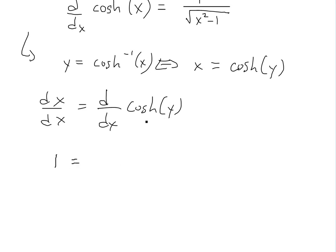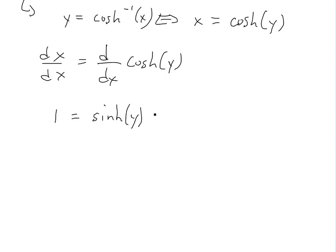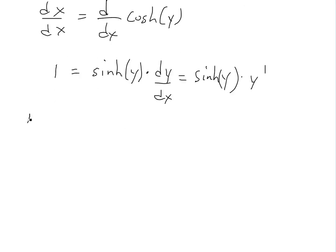On the right side, we use the chain rule. The derivative of hyperbolic cosine is hyperbolic sine — you can see proof of this in the video link below — and since this is in terms of y, we multiply by dy/dx. So we get: 1 equals hyperbolic sine of y times y prime. Solving for y prime gives us y prime equals 1 divided by hyperbolic sine of y.